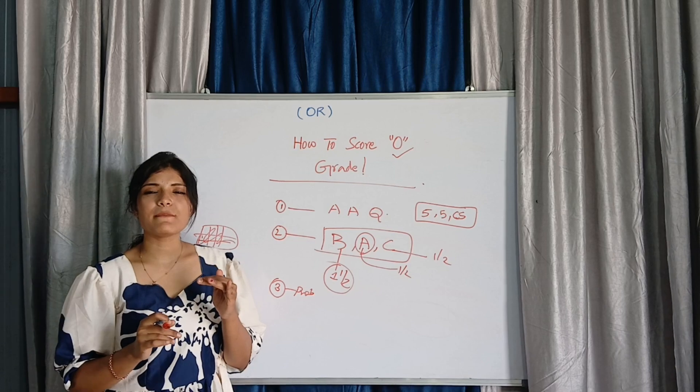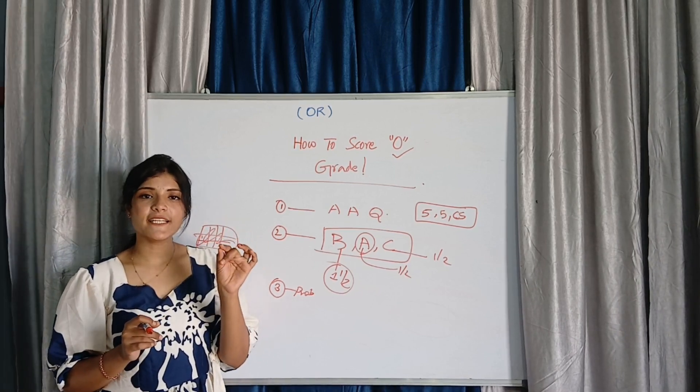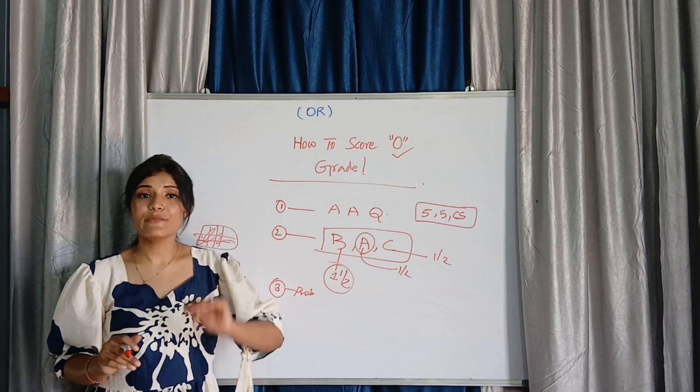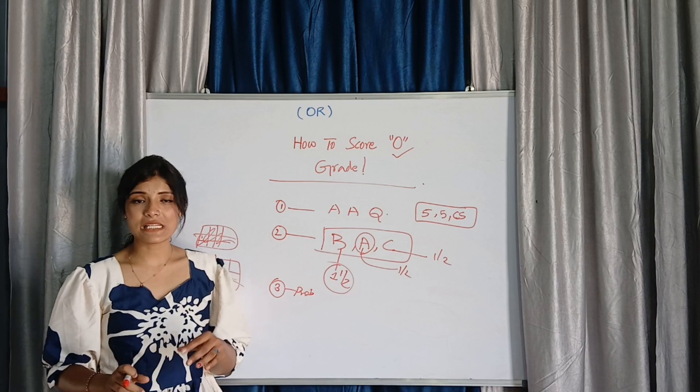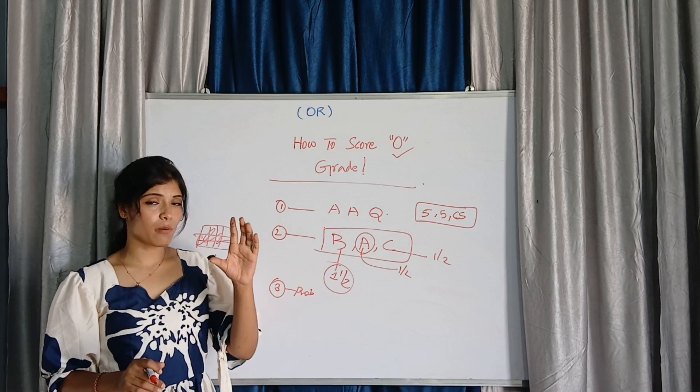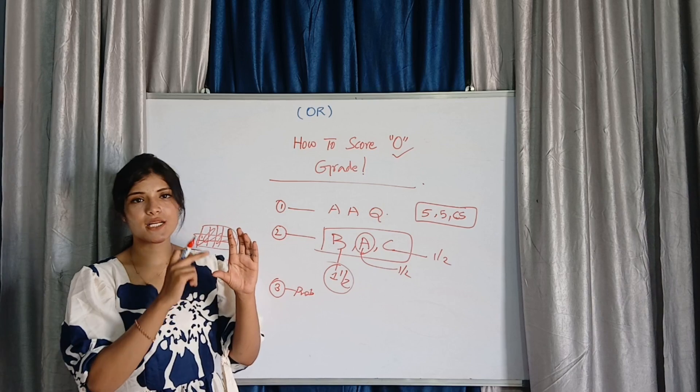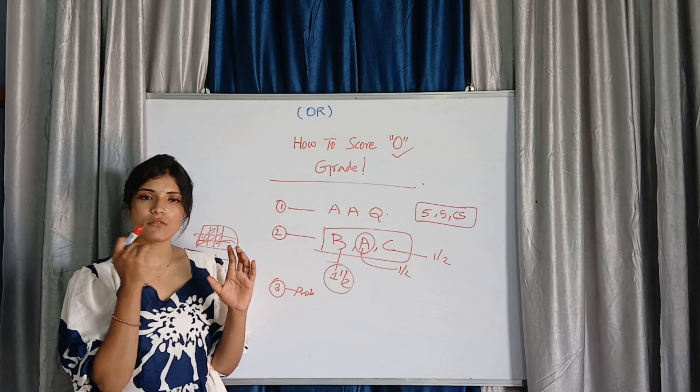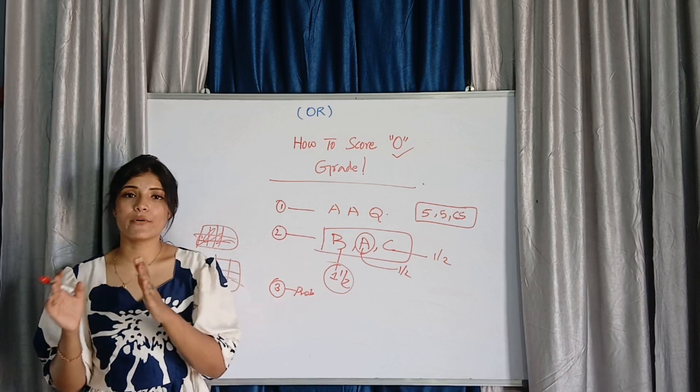Instead of doing that strike off, whatever you know, whatever the values you are thinking that it should be, just keep something or the other. But your handwriting, your structure of your answer should get impressive without any strike off. So that sometimes the evaluator may not see that answer is wrong. That time you can able to score 8 on 8 marks.